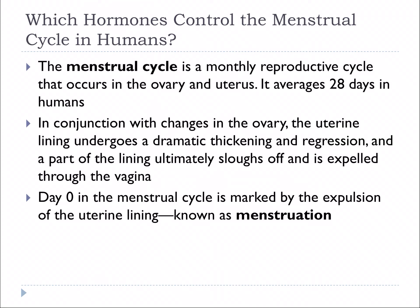One of the major changes that takes place in females is the beginning of the menstrual cycle. The menstrual cycle is a monthly reproductive cycle that averages about 28 days, though it's different for different people. In conjunction with changes in the ovary, the uterine lining undergoes thickening and regression. Essentially, the uterus thickens to support a baby, and if there's no baby, it's sloughed off and expelled — that process at day zero is menstruation.